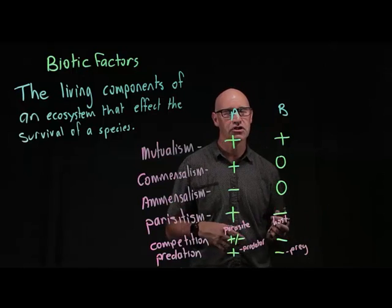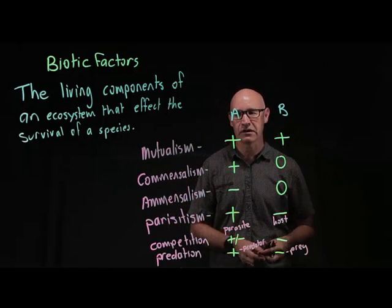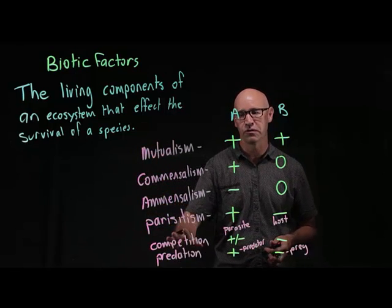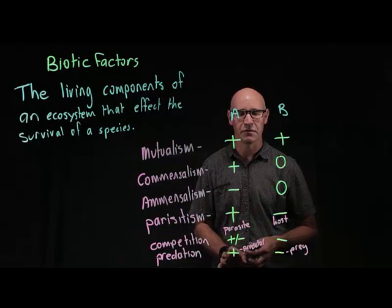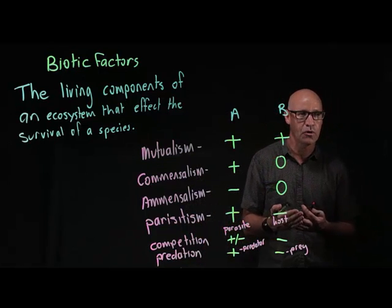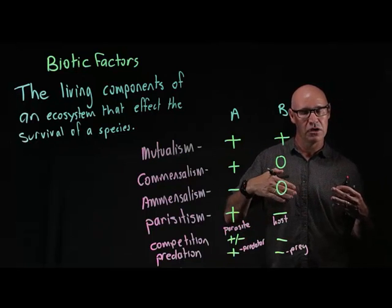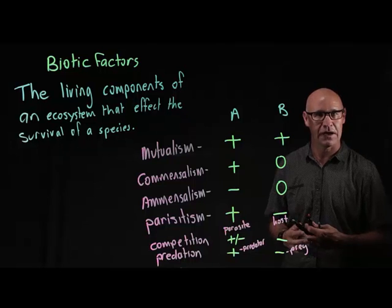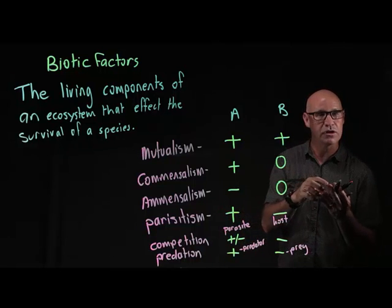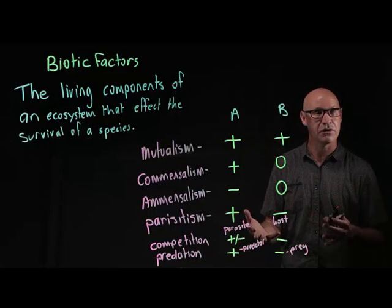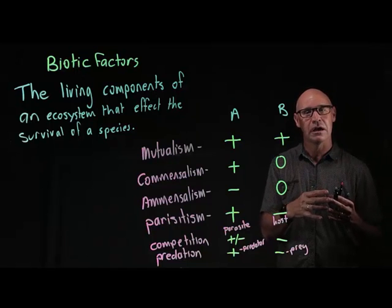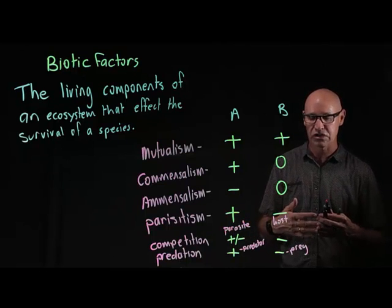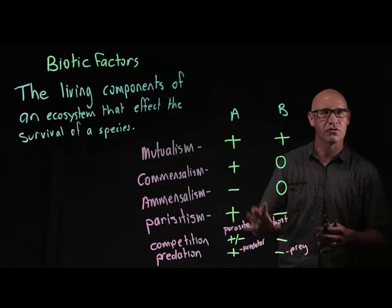So biotic relationships involve looking at an interaction between two species and determining whether each species benefits or is negatively affected, with a whole set of terms to describe those relationships. Just as organisms have adaptations for abiotic factors, they also have adaptations for biotic factors. A classic example is predation — organisms have camouflage to conceal themselves against the environment, improving their chances either as a predator or as prey. There are many different adaptations depending on the type of biotic relationship.